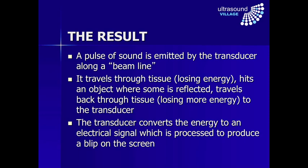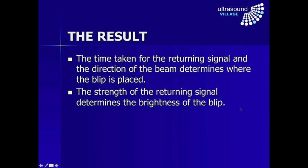In summary: a pulse of sound is emitted by the transducer along the beamline, travels through the tissue losing energy — we call it attenuation — hits an object where some is reflected and most travels through. The reflected wave travels back, gets attenuated a little more, back to the transducer which converts the energy into an electrical signal. The time taken for the returning signal determines how far down the screen the machine puts the blip; the direction of the beam determines where it's placed; and the strength of the returning signal determines the brightness. This is essentially how an ultrasound machine works.